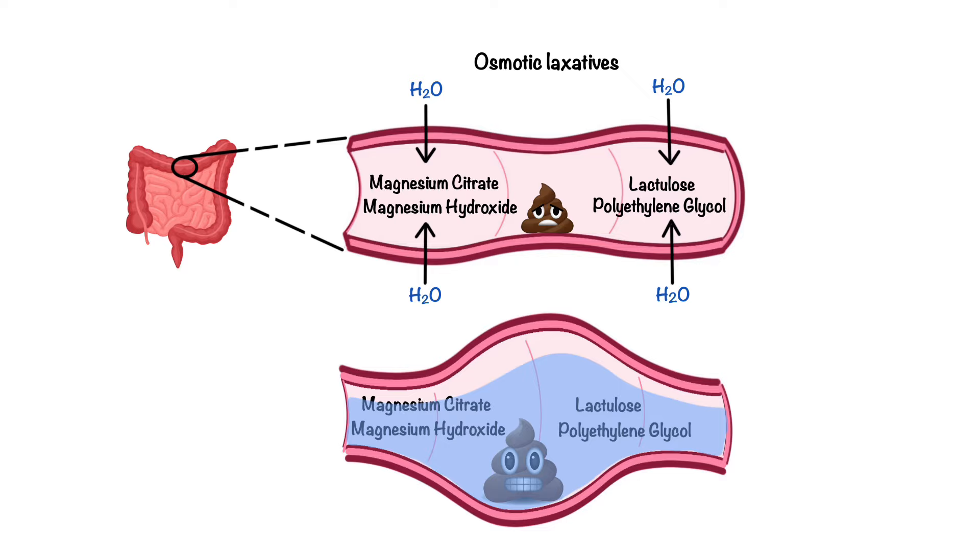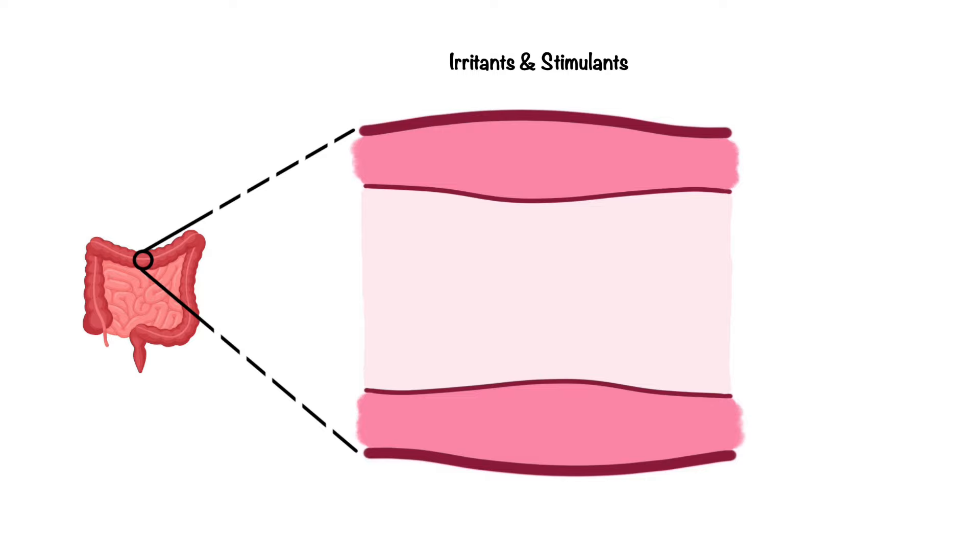The last most commonly used type of laxatives are irritants and stimulants. Laxatives in this group act by a variety of mechanisms. Some stimulant laxatives directly prevent water reabsorption in the colon, as well as promote water secretion from the intestinal cells into the lumen.